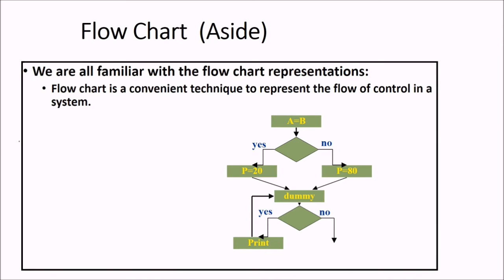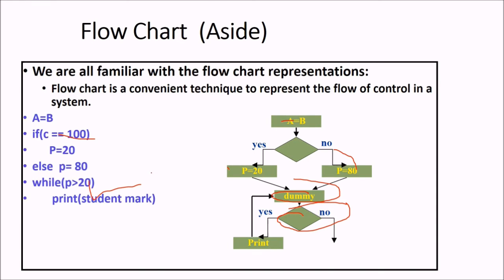So, this is a flowchart, we are quite familiar with the flowchart representation. Flowchart is a convenient technique to represent the flow of control in a system. This is a simple, say, a flowchart of checking A equal to B. If it is yes, then B equal to 20. If no, B equal to 20. There is a dummy. You can enter anything here. And this is a diamond. You will check your conditions here. This is a simple example which represents this.